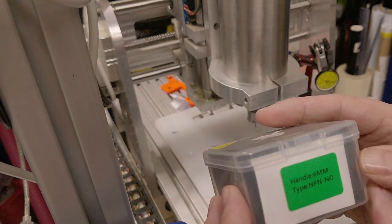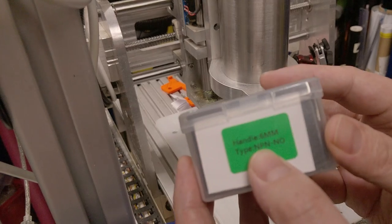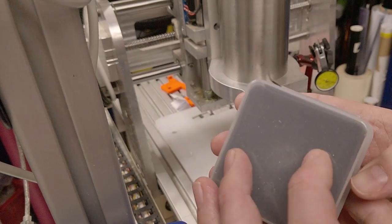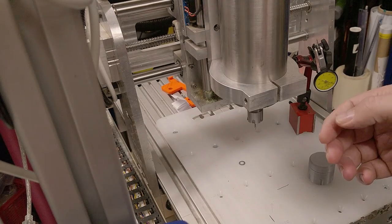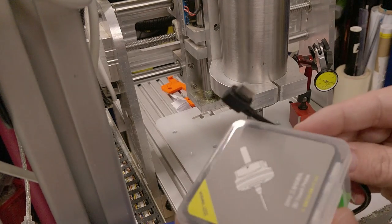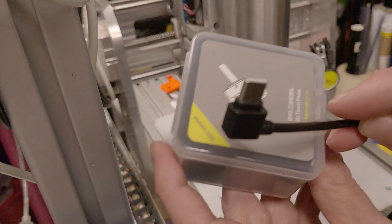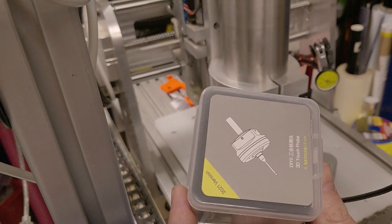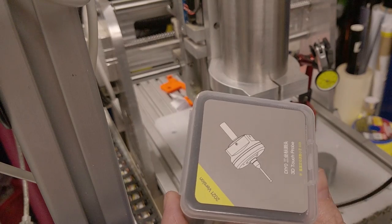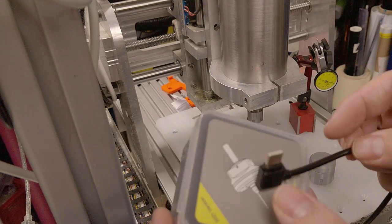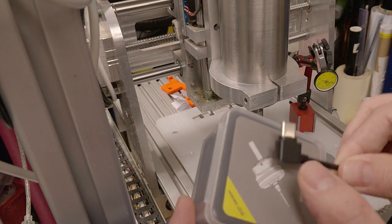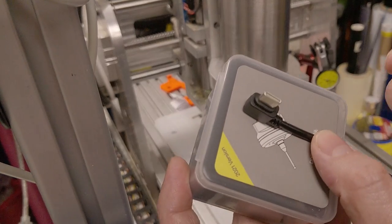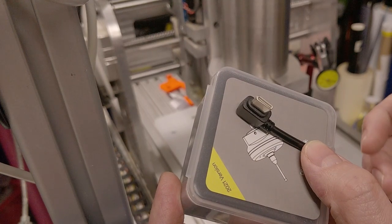It has a six millimeter shaft, it's NPN normally open style, and this is what it comes like. It also comes with a cable that I've already installed. It pretty much looks like USB-C and in fact it is, but you can't use just a standard USB-C cable.